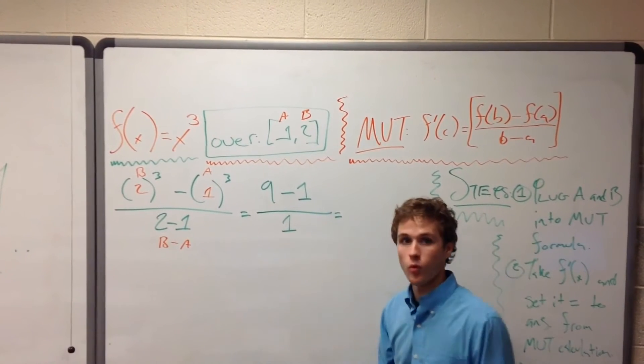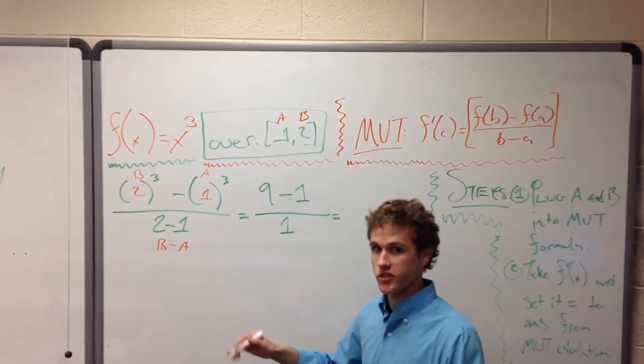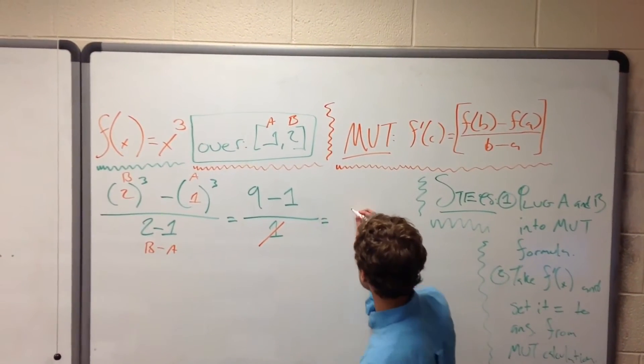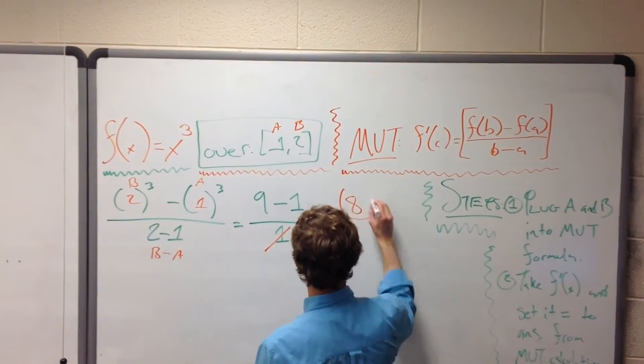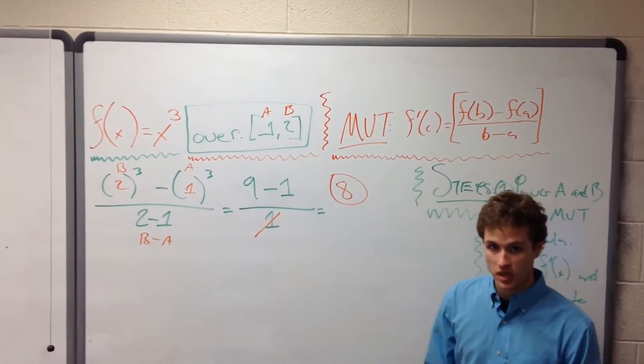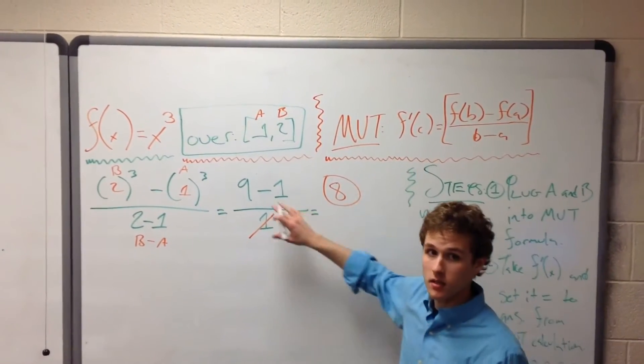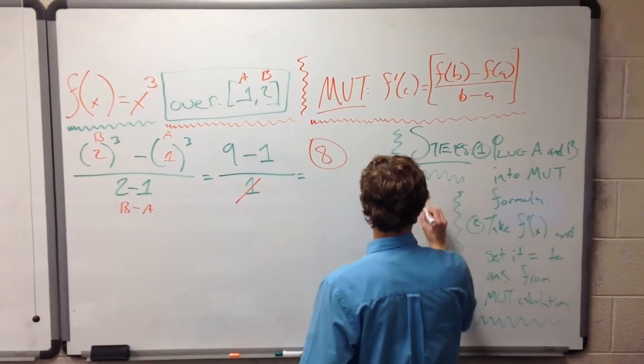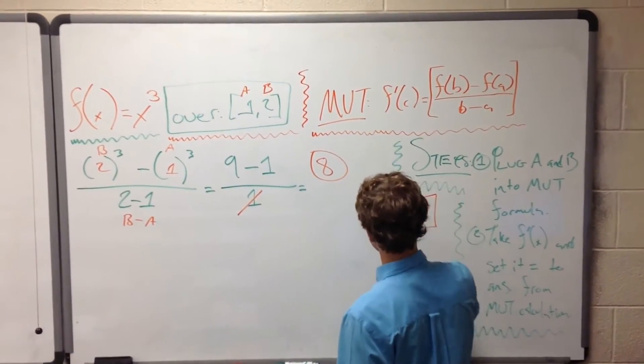Now, anything over 1 is just itself, so let's just ignore the 1. What's the point of having extra numbers up there when we don't need them? So 9 minus 1 is 8. So our first value of importance is 8. We plugged everything in to the mean value theorem, and we got 8 from our original function.